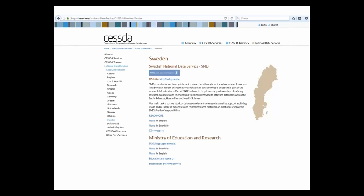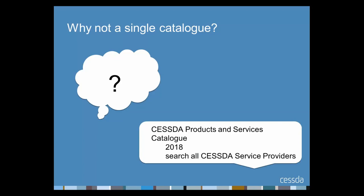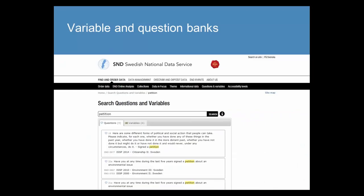You can find information and links to all of the national data archives on the CESSDA website. In June there will be a new look to the CESSDA website, with lots of useful resources including a recording of this webinar. A reasonable question is why there isn't just one single catalogue with all the data. Fortunately this is in progress — CESSDA are currently building a catalogue due to go into service in 2018, when you will be able to search data sources from all CESSDA service providers.